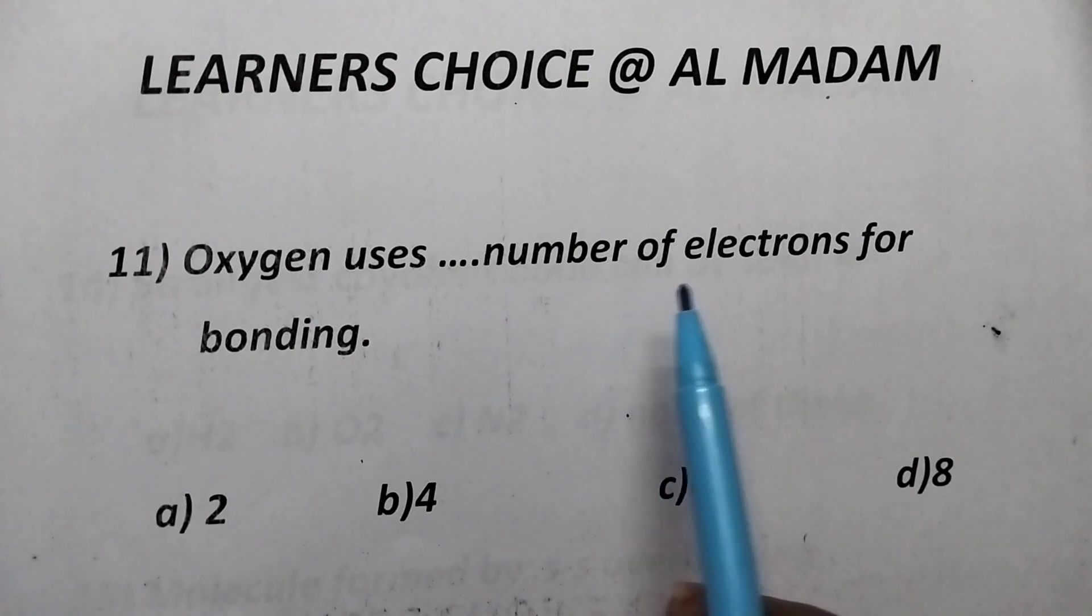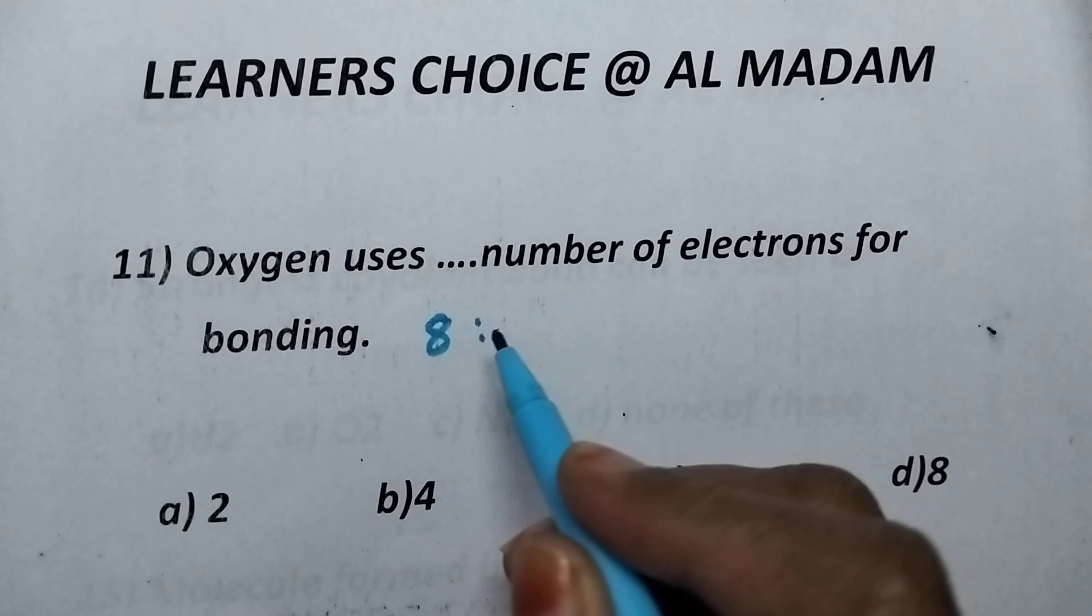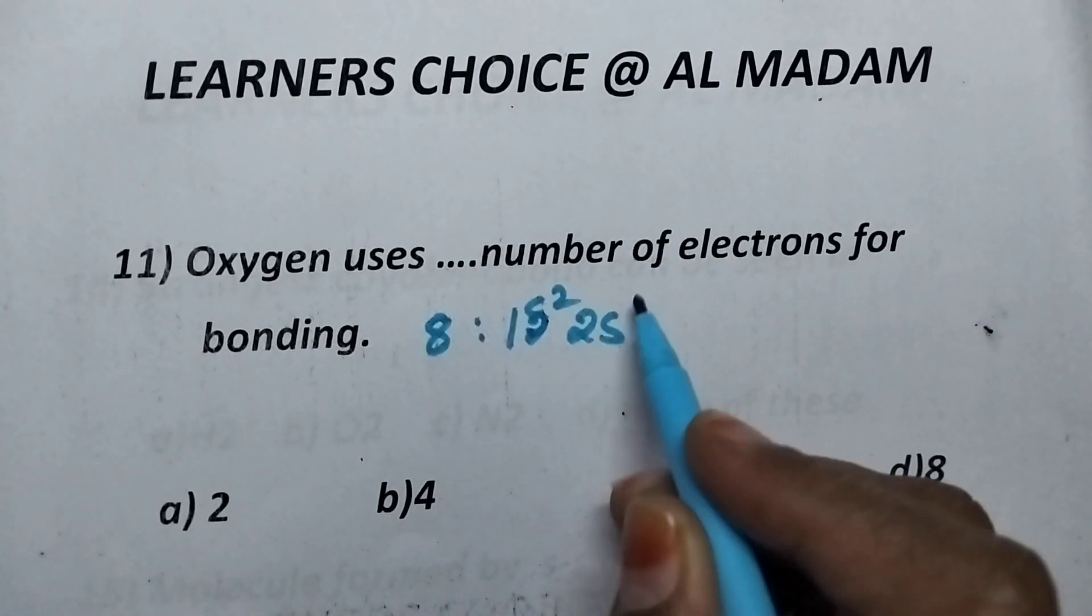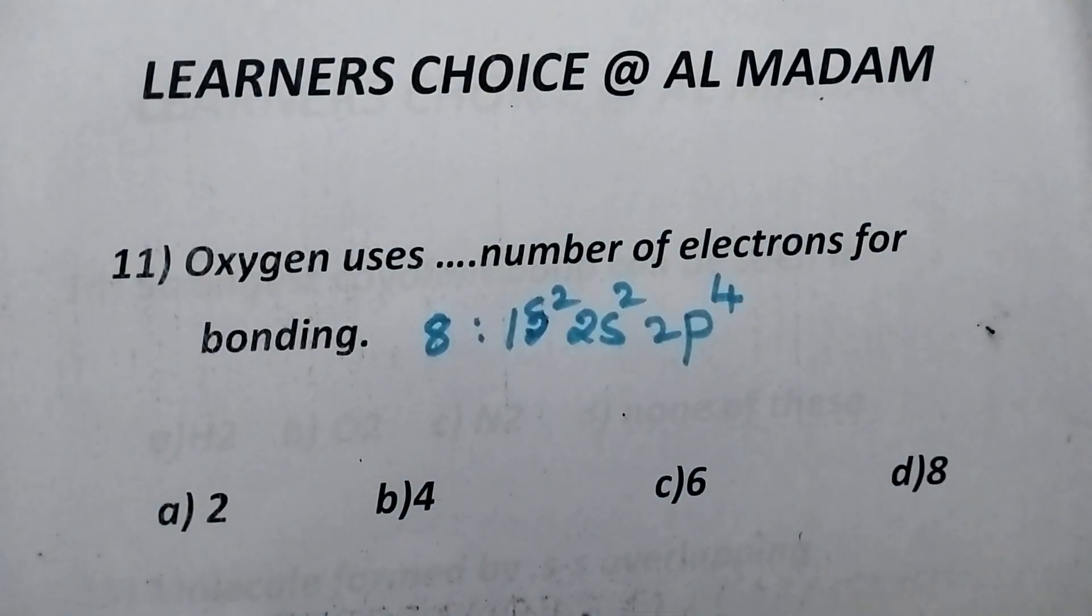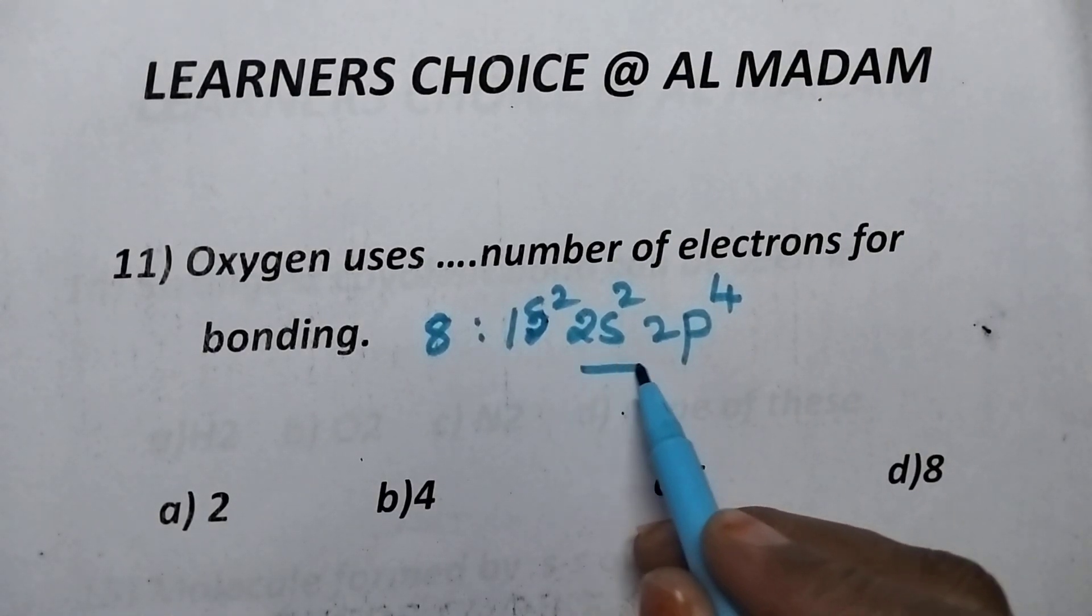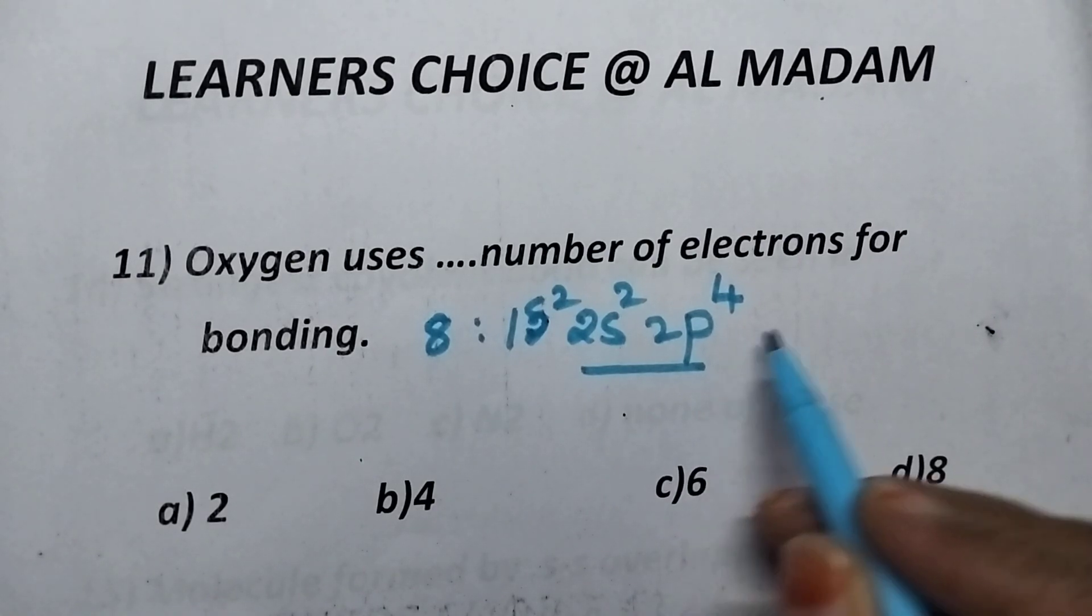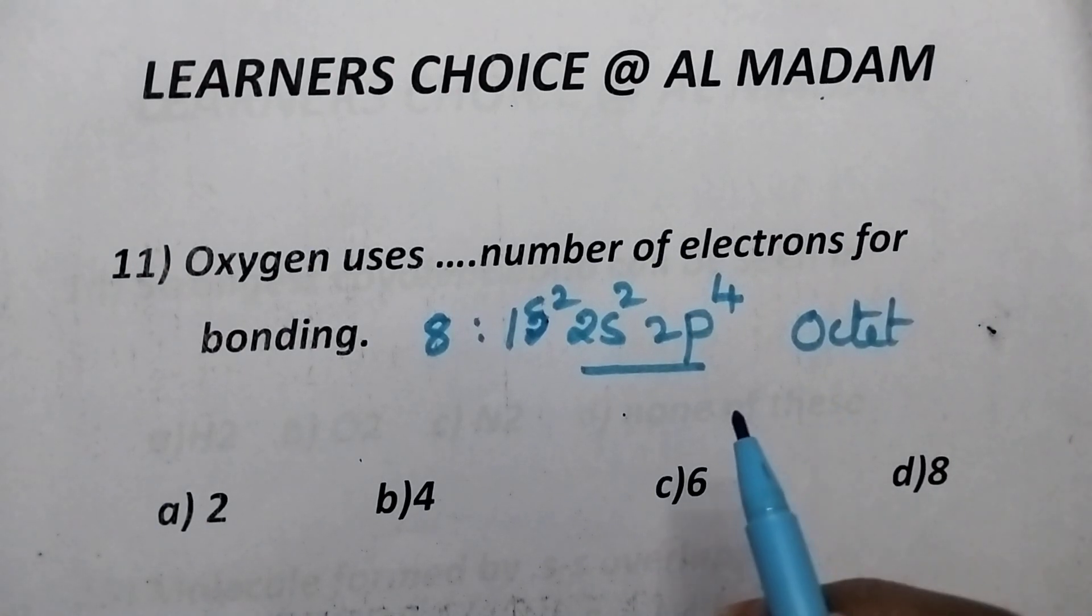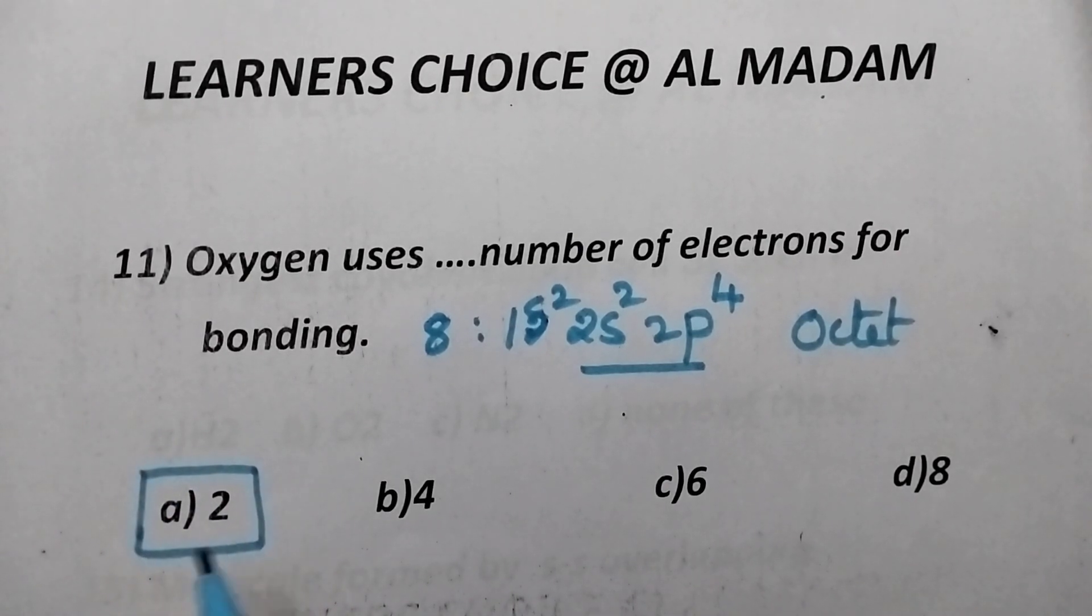Oxygen uses dash number of electrons for bonding. The atomic number of oxygen is 8. Hence, its configuration is 1s2, 2s2, 2p4. So, in the outermost orbit, oxygen is having 6 electrons. It requires 2 electrons for the stable octet configuration and hence it uses 2 electrons for the bond formation. So, in this case, option A, 2 is right answer.